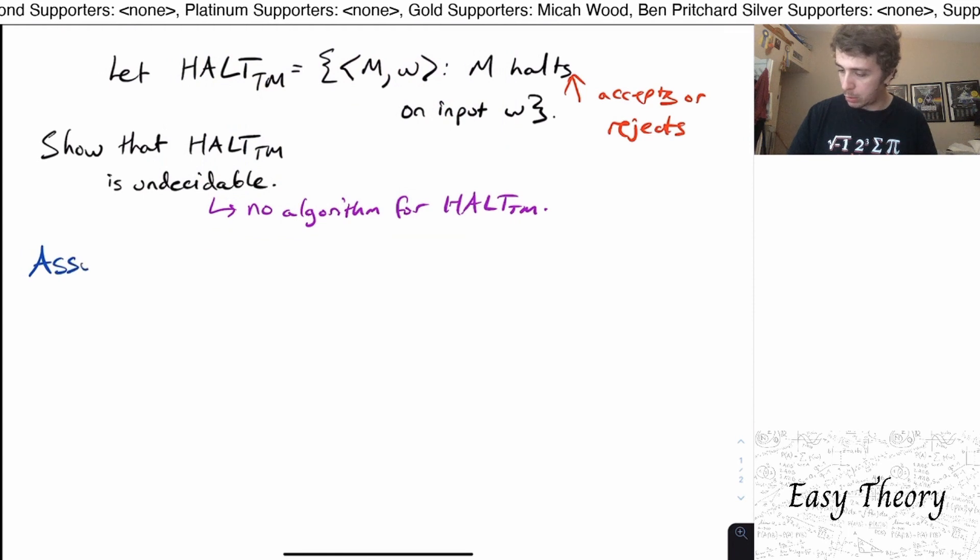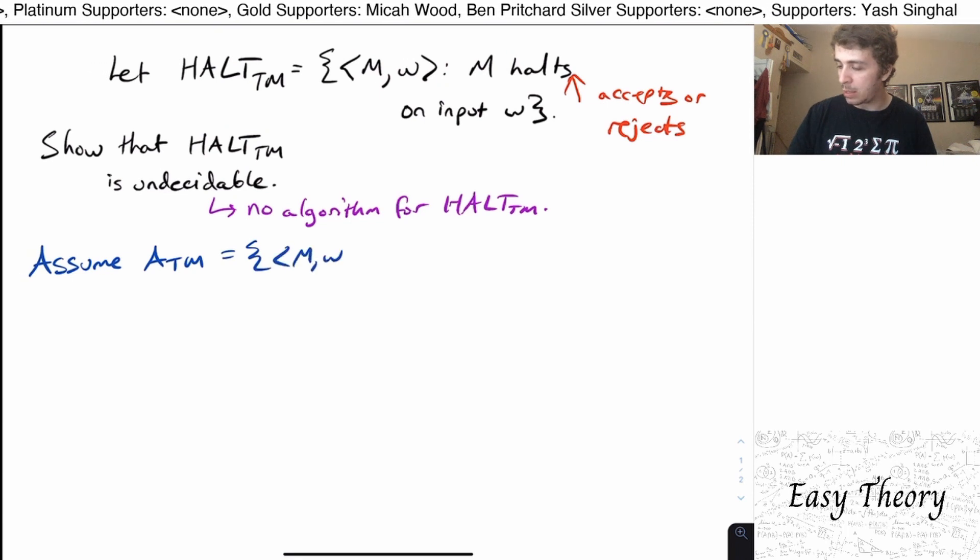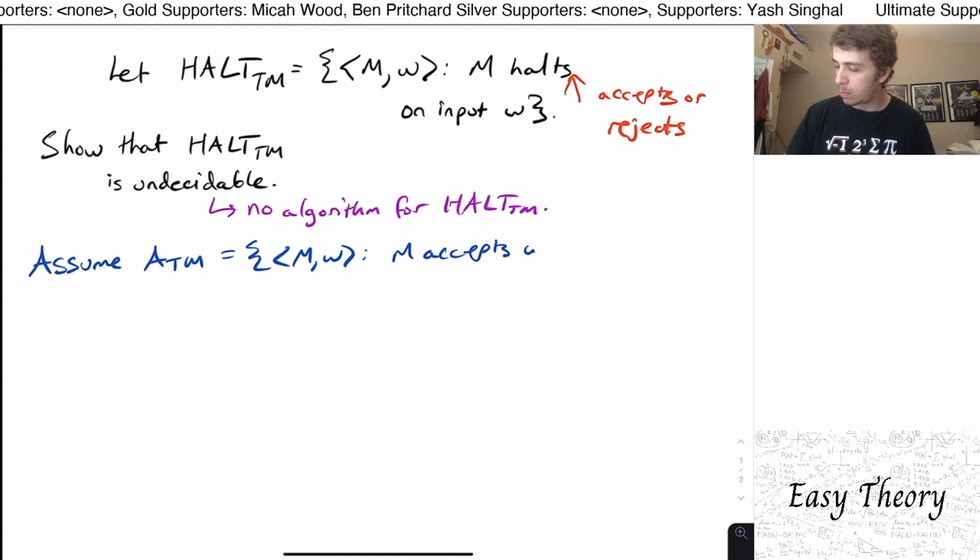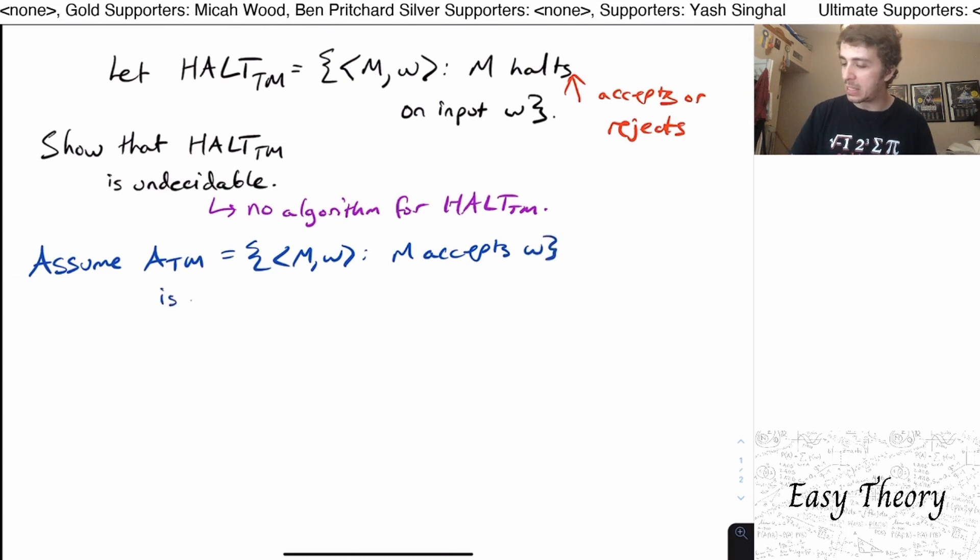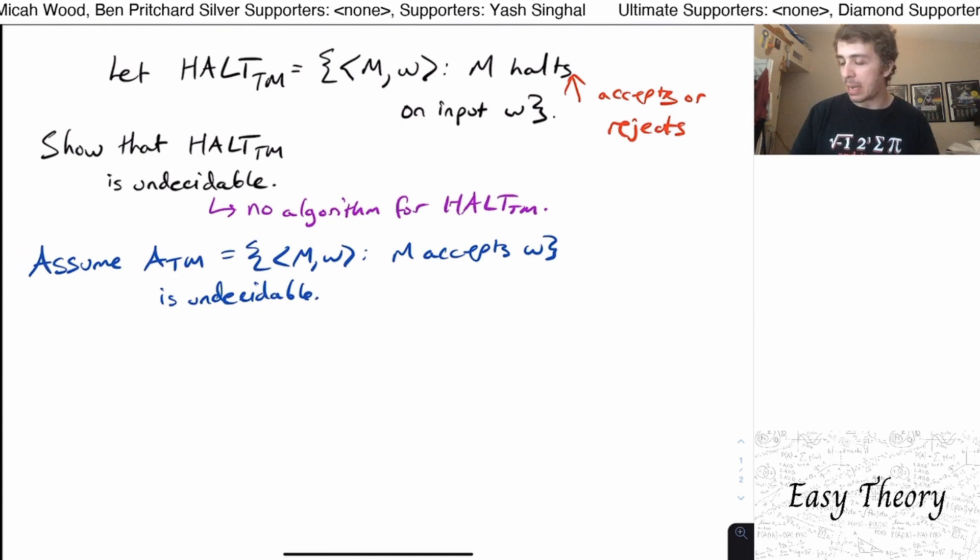Well, what we can do is to use a known undecidable problem. So what we're going to assume here is that ATM, which is the language MW, where M accepts W, we're going to assume that this is undecidable, because it is.